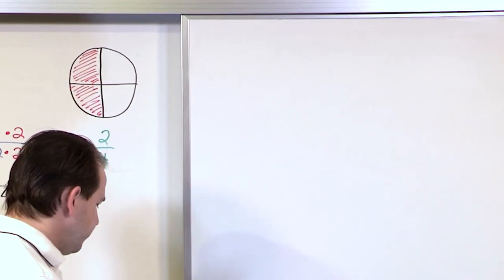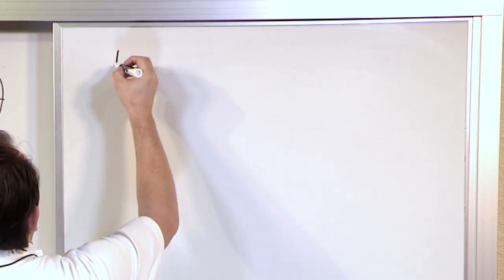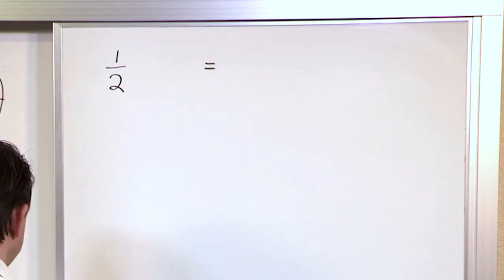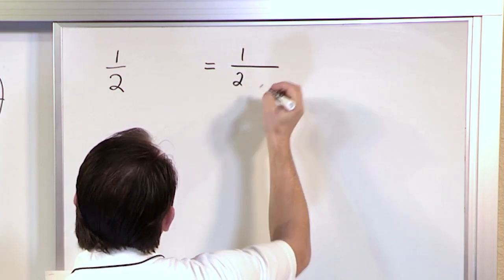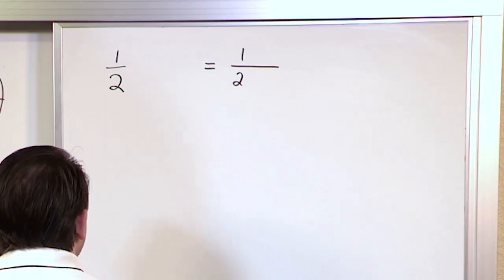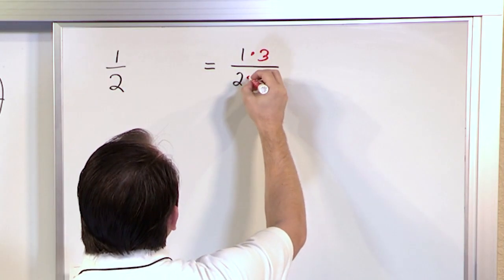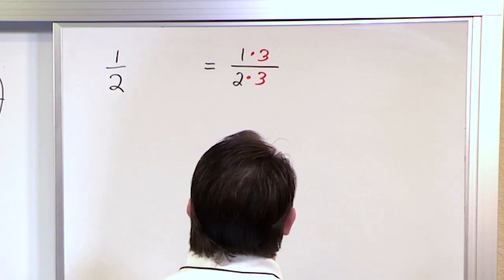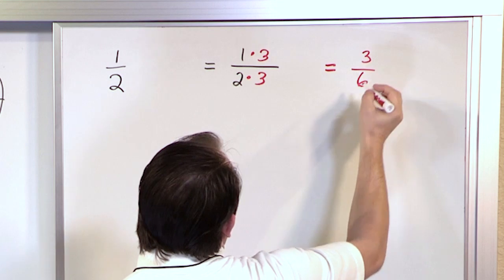Let's do another one to continue helping us. Let's take the fraction one half and multiply it by something different, just to prove to ourselves it's the same thing. Let me rewrite this fraction with a longer fraction bar. In this case, I don't want to multiply by 2. I'm going to multiply by 3, and I can do that as long as I multiply both the top and the bottom by 3. So one times three gives me three, and two times three gives me six.